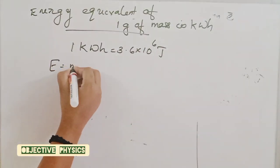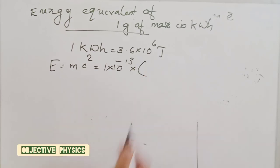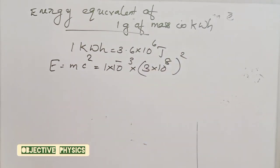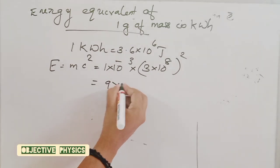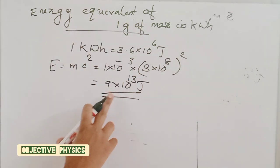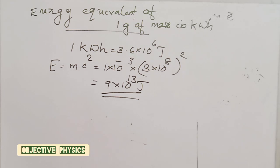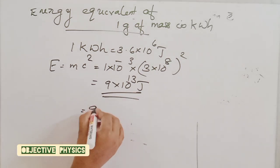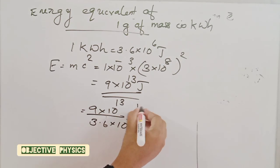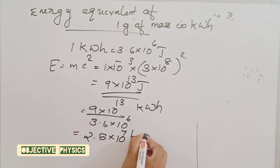Energy equivalent of 1 gram of mass in kilowatt hours. Using E = mc², this is equal to 9 × 10¹⁰ joule divided by 3.6 × 10⁶ joule per kilowatt hour.